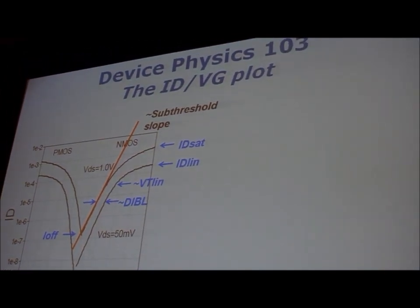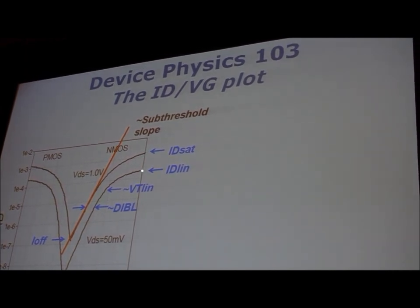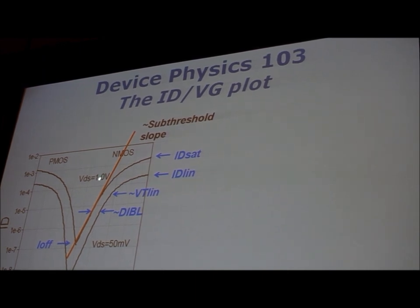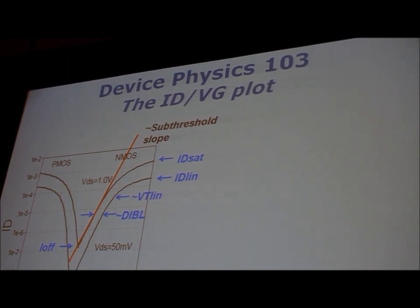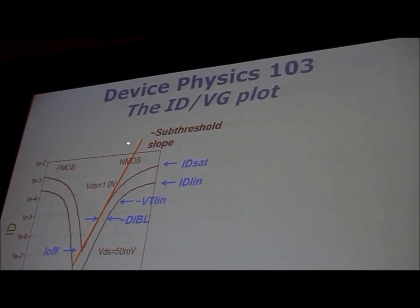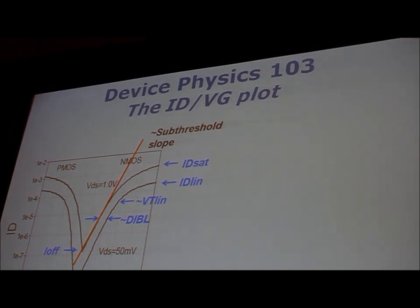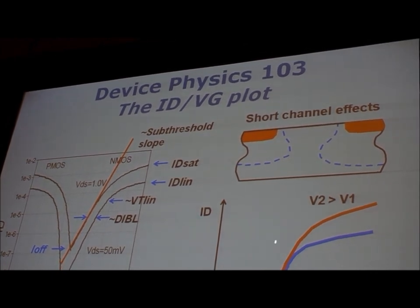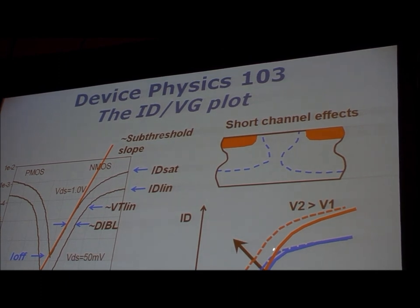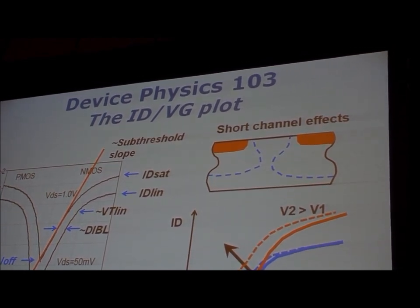Device folks like to plot VG versus ID, where the saturation voltage is at the corner of the plot. IDIN is the 50mV VDS curve versus the 1V VDS curve, and the subthreshold slope is the slope of the high VDS curve. The closer these curves are to each other and the steeper the slope, the better the short-channel properties. On a short-channel device, these curves separate from each other and the slope gets worse — that's how you tell from the graphs if a device has good short-channel control.